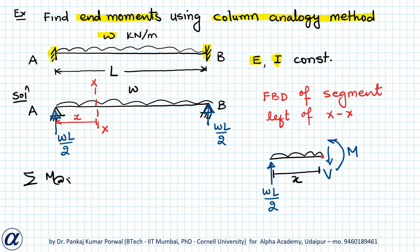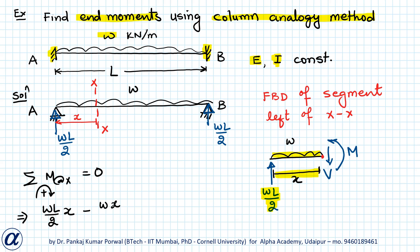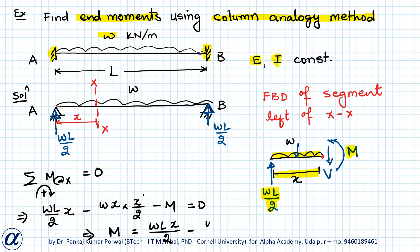Writing the moment equilibrium equation about X, taking clockwise moments as positive: the moment due to wL/2 is plus wL/2 times x; the moment due to the UDL of intensity w over length x is minus w·x times x/2; and the moment M is anti-clockwise, so minus M equals zero. This gives M = wLx/2 − wx²/2.